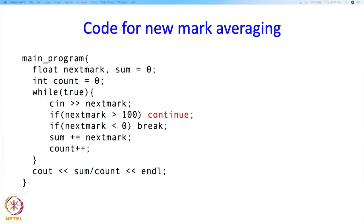So here is the new program with this new additional requirement. So the main difference is this statement: if next mark is bigger than 100 we continue, which means we will skip this entire part and we will start again. So essentially this last mark that you read is going to be ignored. Otherwise if it is less than or equal to 100, then it is a valid mark and so we do everything that we were doing earlier.